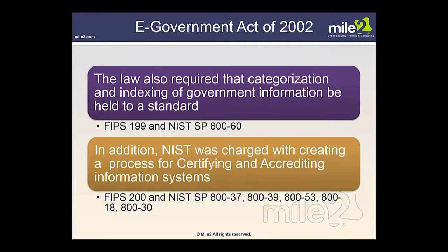This law also required the categorization and indexing of government information to a standard — FIPS 199 and NIST Special Publication 800-60. In addition, NIST was charged with creating a process for certifying and accrediting information systems, as seen with FIPS 200, NIST SP 800-37, 800-39, 800-53, 800-18, and 800-30. The idea was that in order to protect information and information systems to an adequate level, it was important to categorize information according to the level of impact that a breach of confidentiality, integrity, or availability would have.